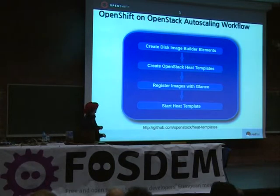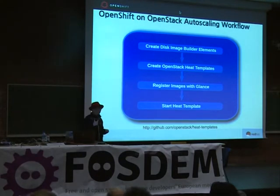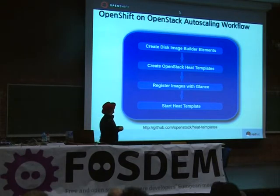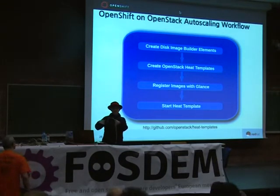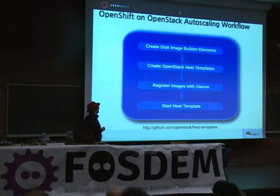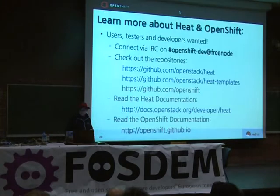The steps for running this: there's a project called Disk Image Builder that creates the image for the broker. You have to instantiate a broker image and a node image. Then you run the Heat templates in that GitHub repository, register the images with Glance, and then start the actual Heat templates.